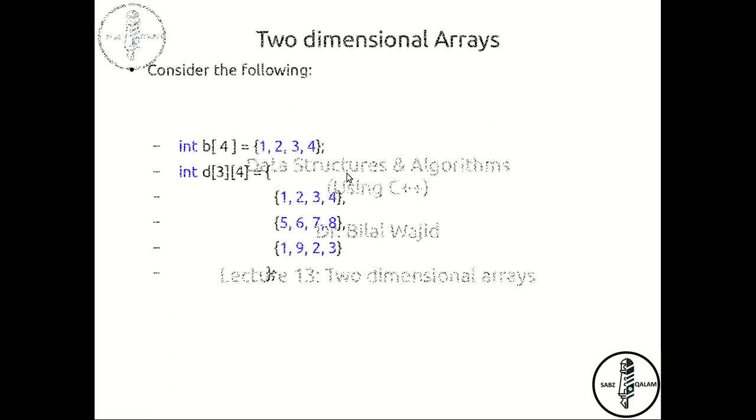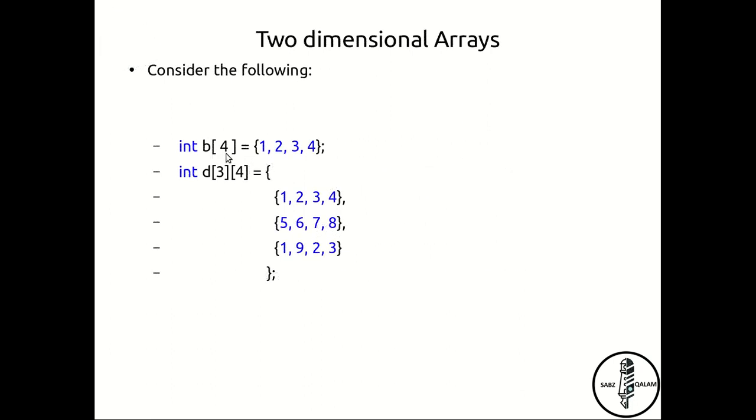So this is how you declare an array and then initialize it using these curly brackets. And in two-dimensional arrays, you just put two square brackets. One determines the number of rows and the other one the number of columns. Here, each row is separated by a comma and obviously once the whole declaration is made, you put the semicolon.